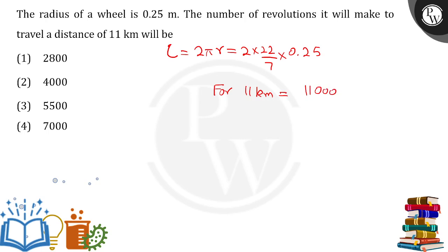For one revolution, the distance covered is 2 into 22 into 0.25 divided by 7. So you can cancel out 22 over here with 11 in the numerator.